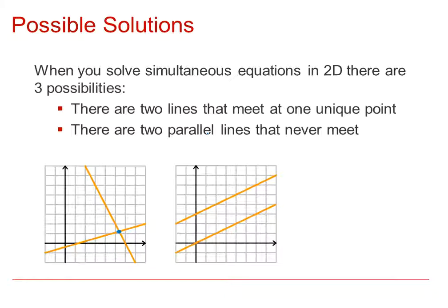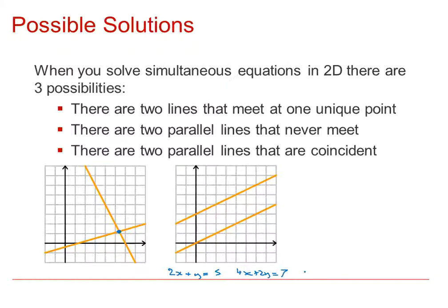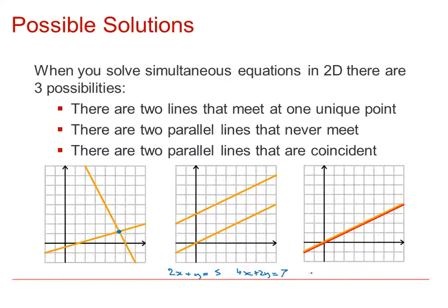For the case of two parallel lines that never meet, the determinant of the matrix would be zero. An example would be equations such as 2X + 3Y = 5 and 4X + 2Y = 7. The third case is two parallel lines that are coincident — two lines in exactly the same place. Again, the determinant would be zero. An example of this would be 2X + 3Y = 1 and 4X + 6Y = 2. You can see these are intrinsically the same straight line.